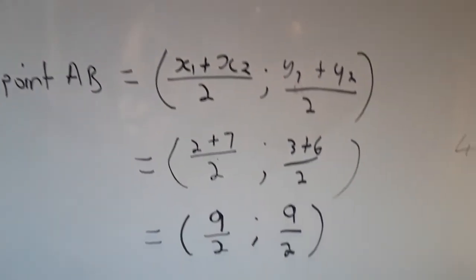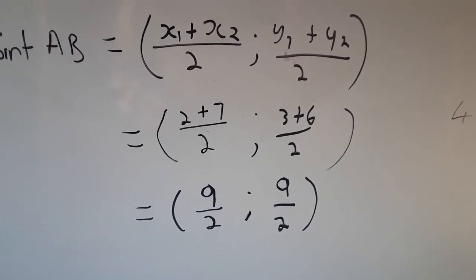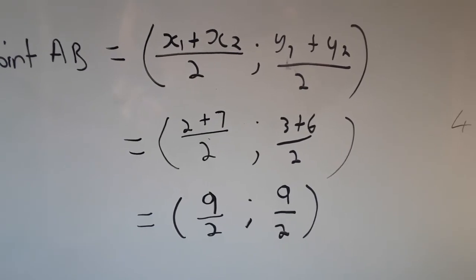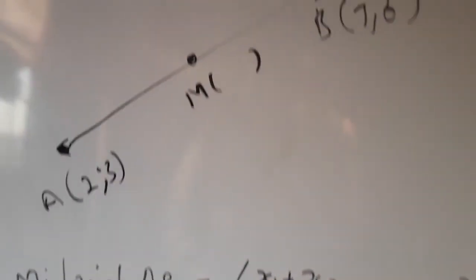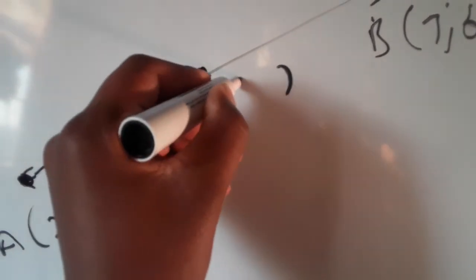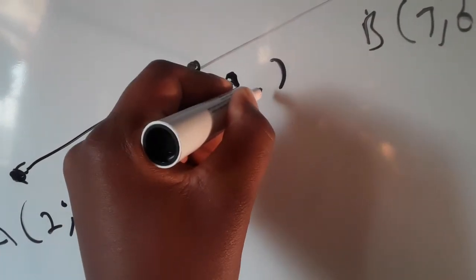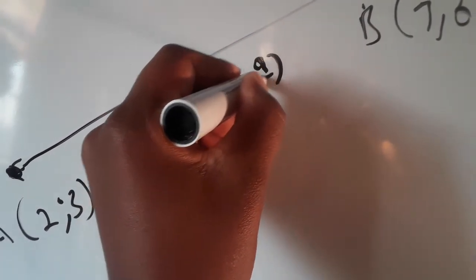And then 3 plus 6... 7, 8, 9. So we have 9 over 2 as our y-value. At this point, our midpoint of this line is (9/2, 9/2).